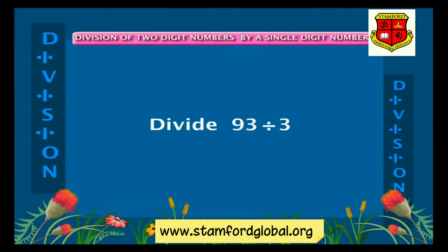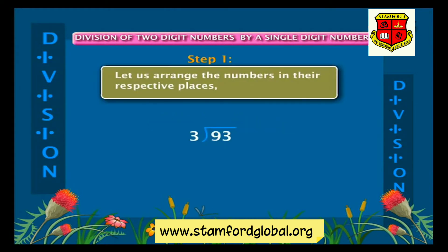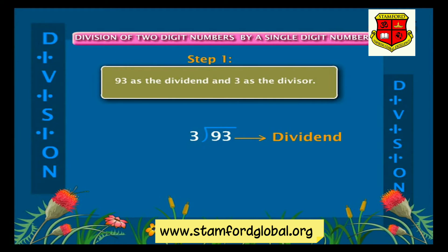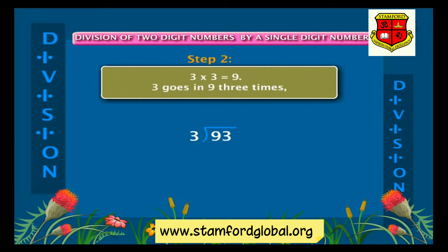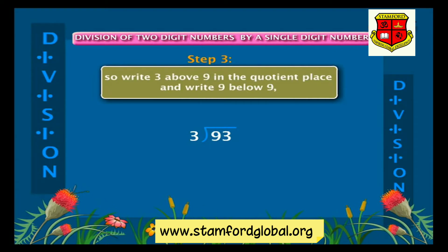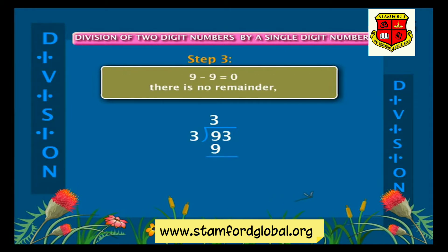Division of two-digit numbers by a single-digit number. Example one: divide ninety-three by three. Arrange the numbers — ninety-three as the dividend and three as the divisor. Recite the multiplication tables of three. Three into three is equal to nine, so three goes into nine three times. Write three above nine in the quotient place and write nine below nine. Nine minus nine is equal to zero, there is no remainder.